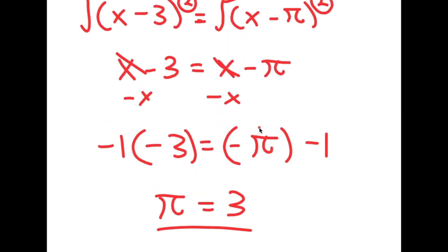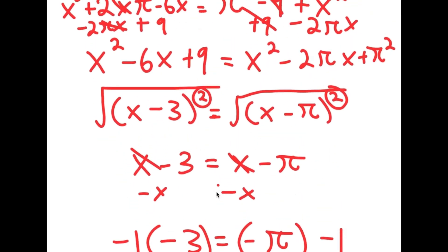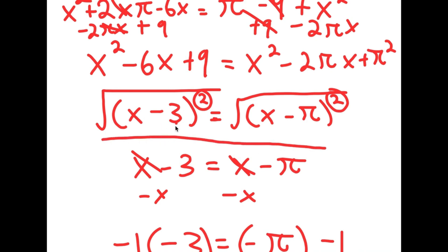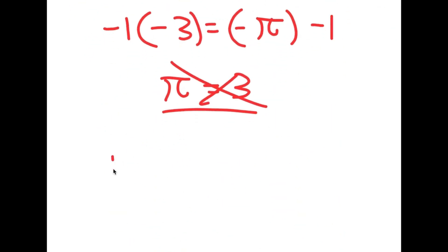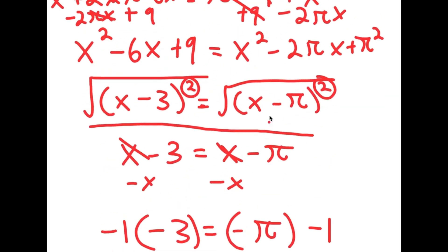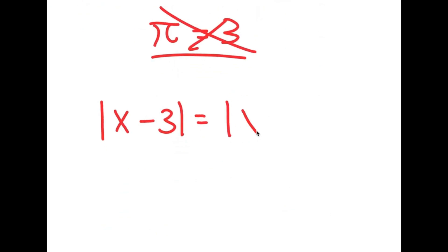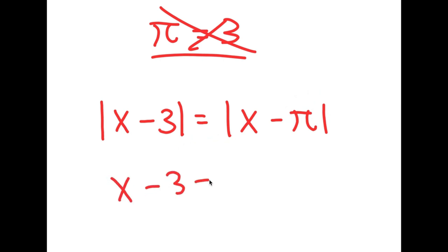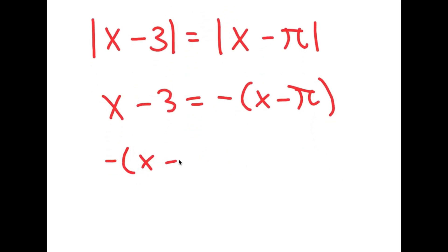So there you have it — I just proved that pi is equal to 3. But where did I go wrong? Obviously, we know that pi is not equal to 3. I actually went wrong on the step where I said the square root of (x minus 3) squared equals x minus 3 and the square root of (x minus pi) squared equals x minus pi. This is actually not true. The square root of (x minus 3) squared equals the absolute value of x minus 3, and the square root of (x minus pi) squared equals the absolute value of x minus pi. So now I get |x minus 3| equals |x minus pi|, which means x minus 3 equals negative(x minus pi), or negative(x minus 3) equals positive(x minus pi).